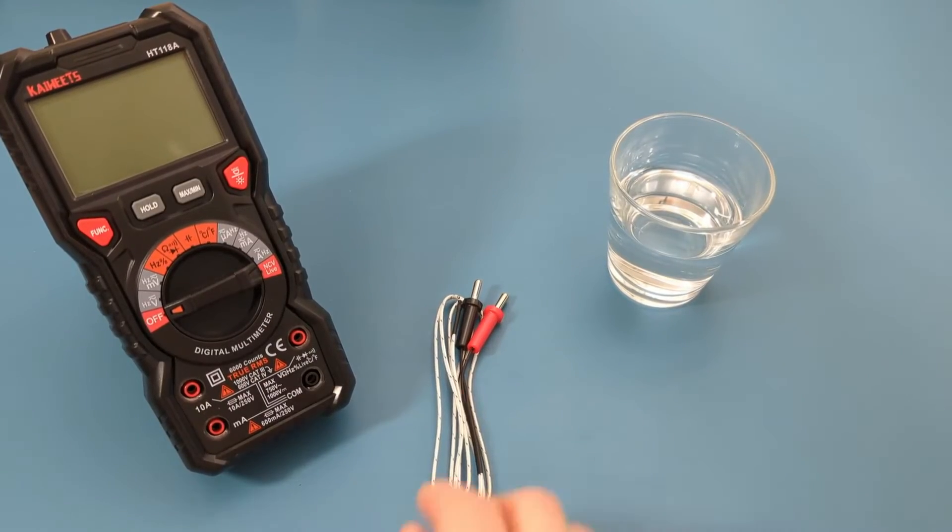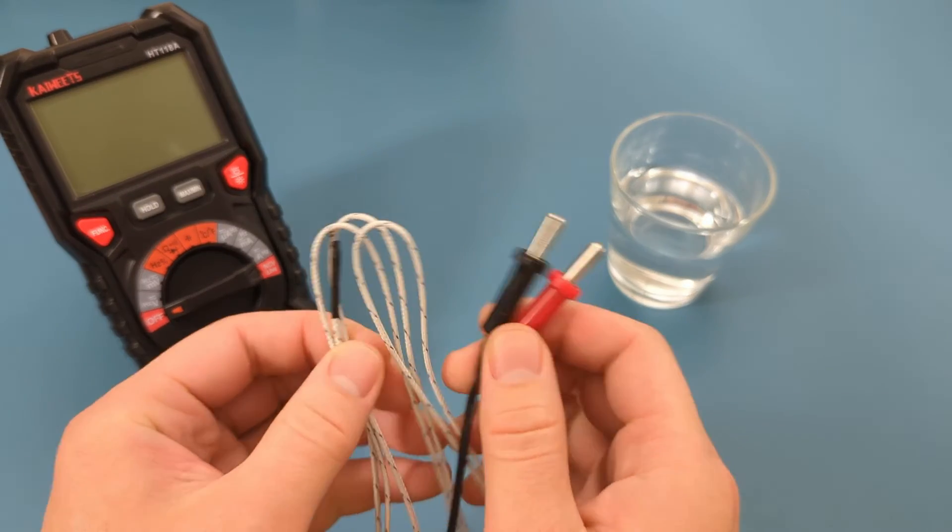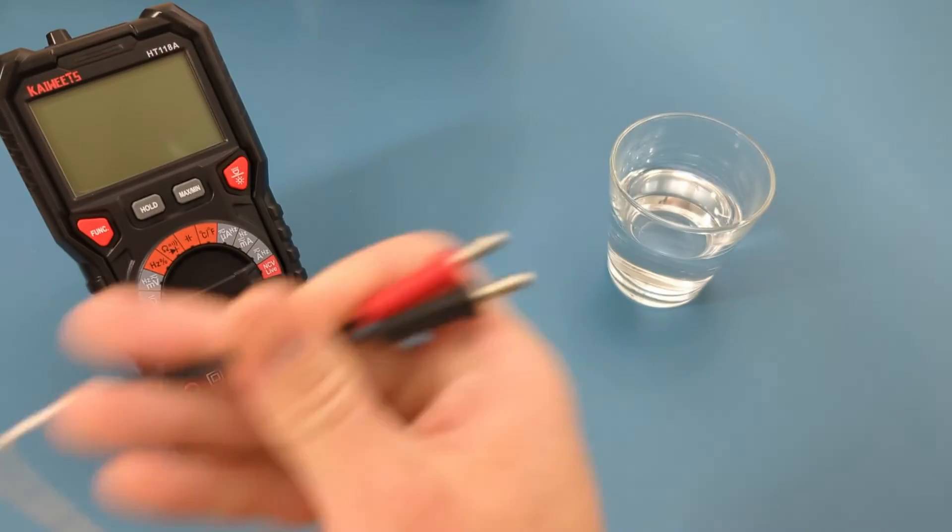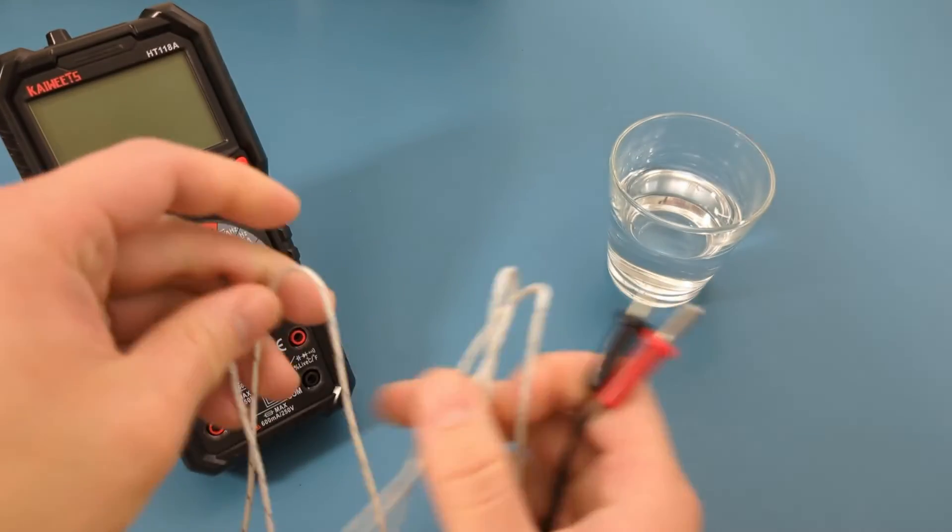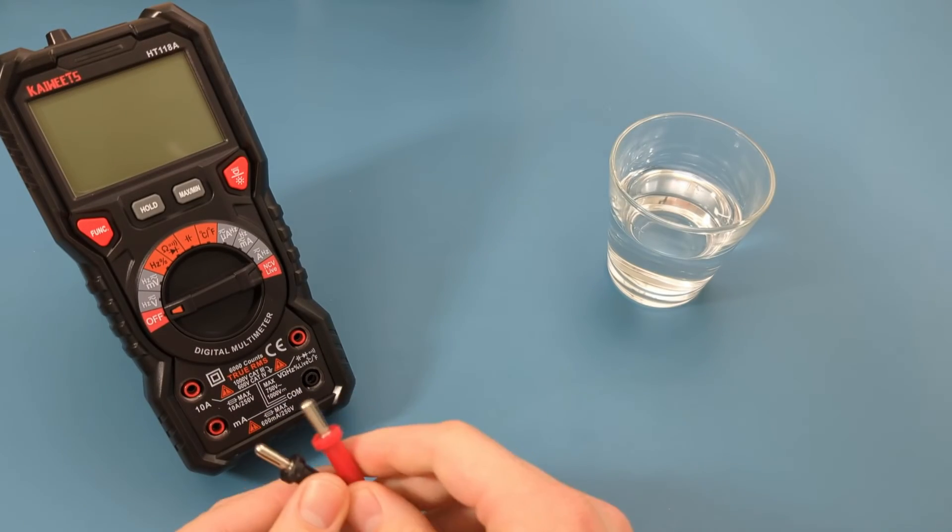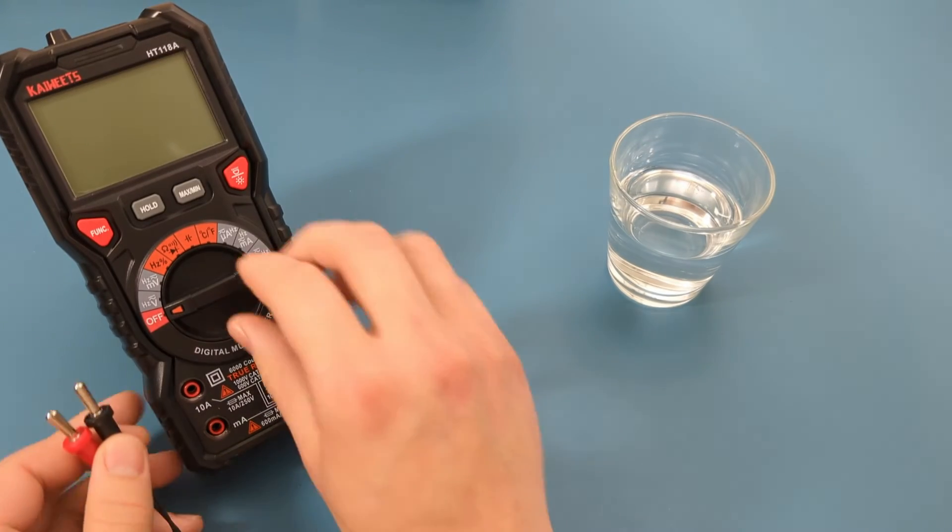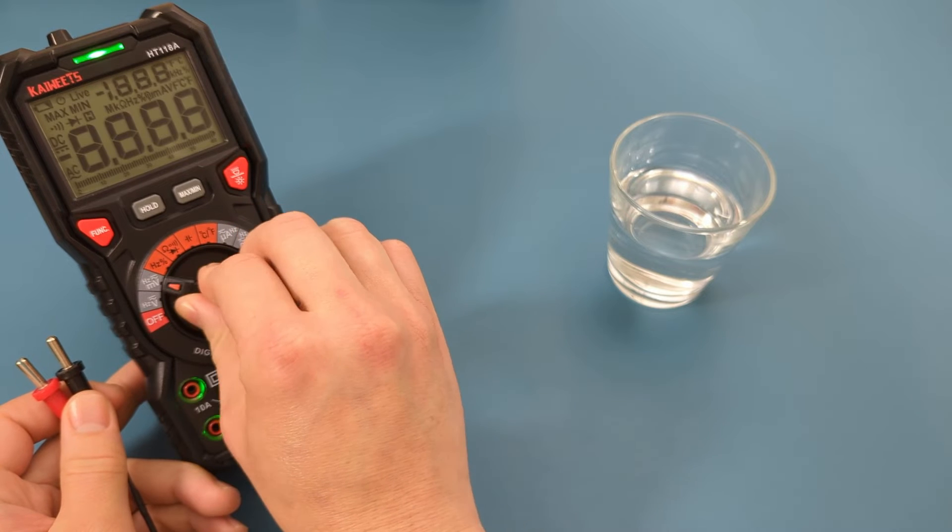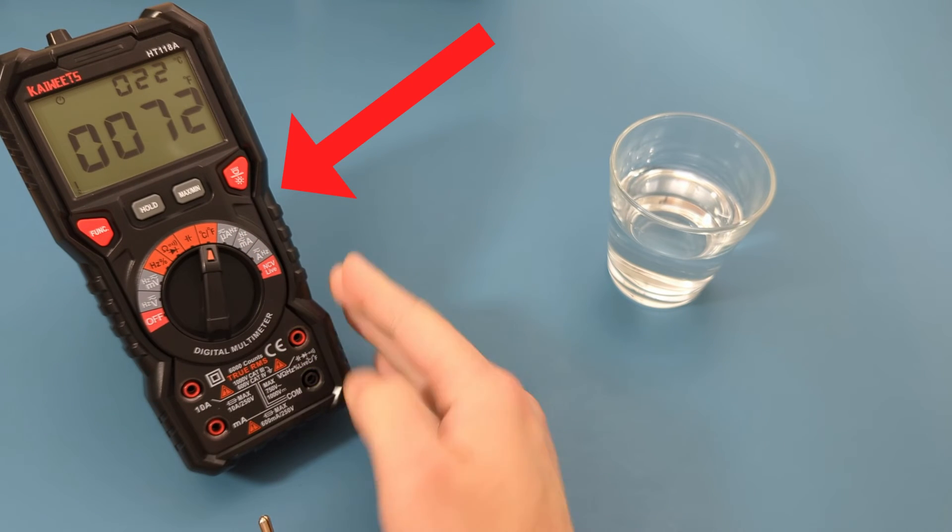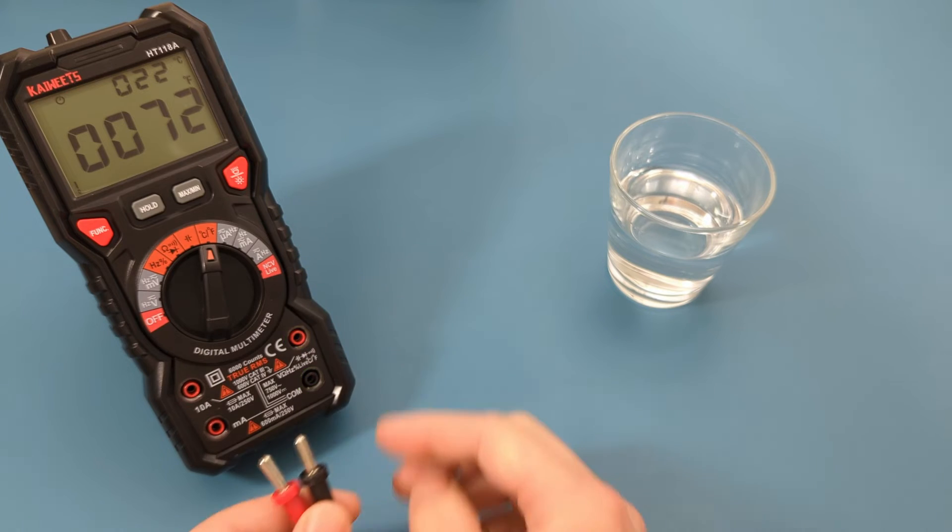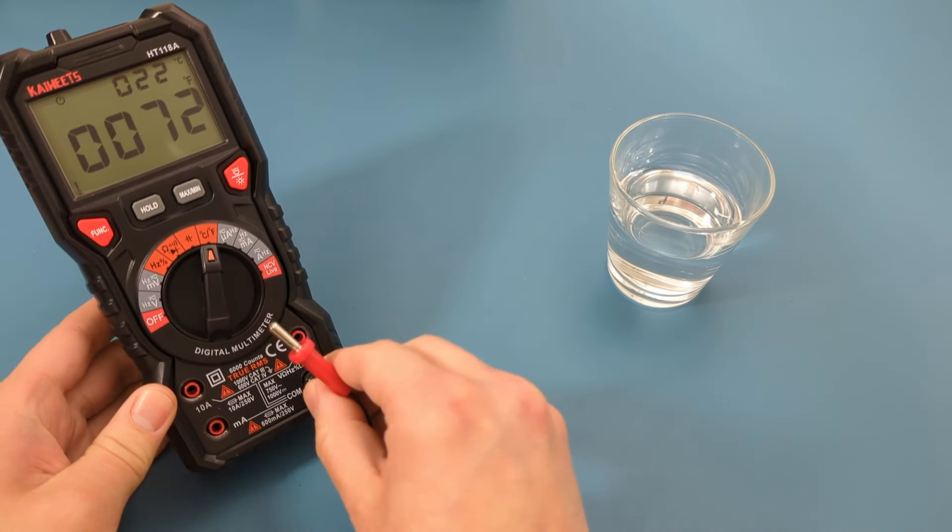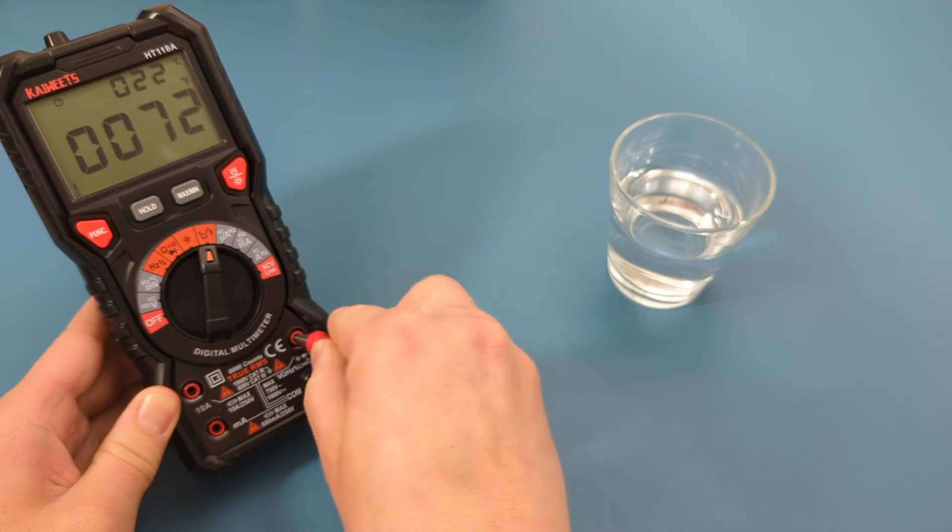In this test, we will check the temperature of a glass of water. Replace the probes with the thermocouple. Turn the dial to the Celsius and Fahrenheit setting. The LED on the right two jacks should light up. Like the probes, connect the black wire to the COM port and the red wire to the voltage and ohm port.